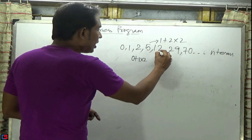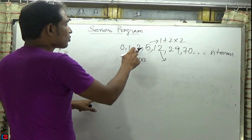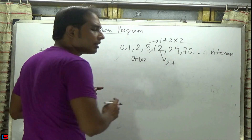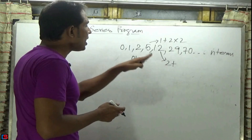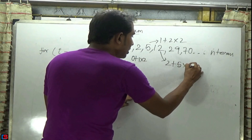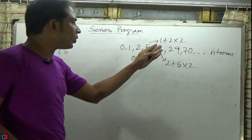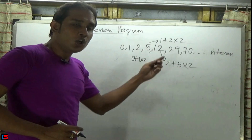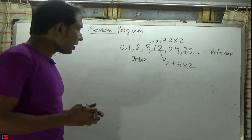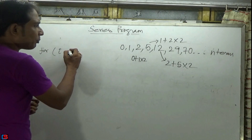Now how is 12 generated? The previous two terms are 2 and 5. So the first value 2 is added normally, and the second value 5 is multiplied by 2: 5 into 2 equals 10, plus 2 equals 12. This is how the series is generated. Now I am going to write the program.